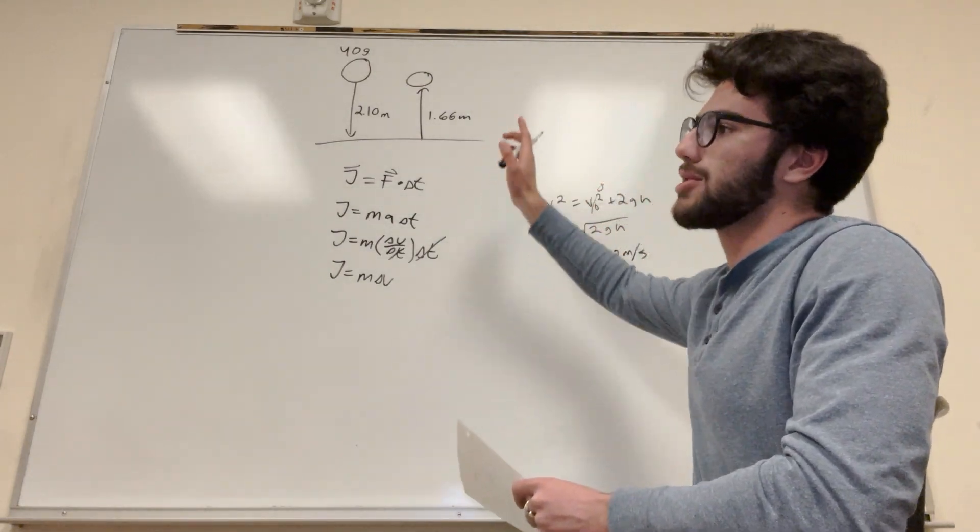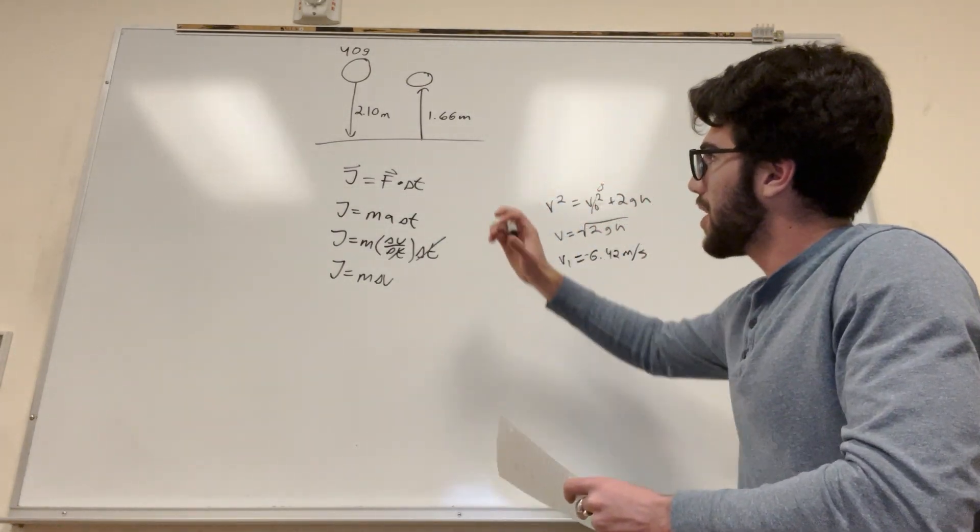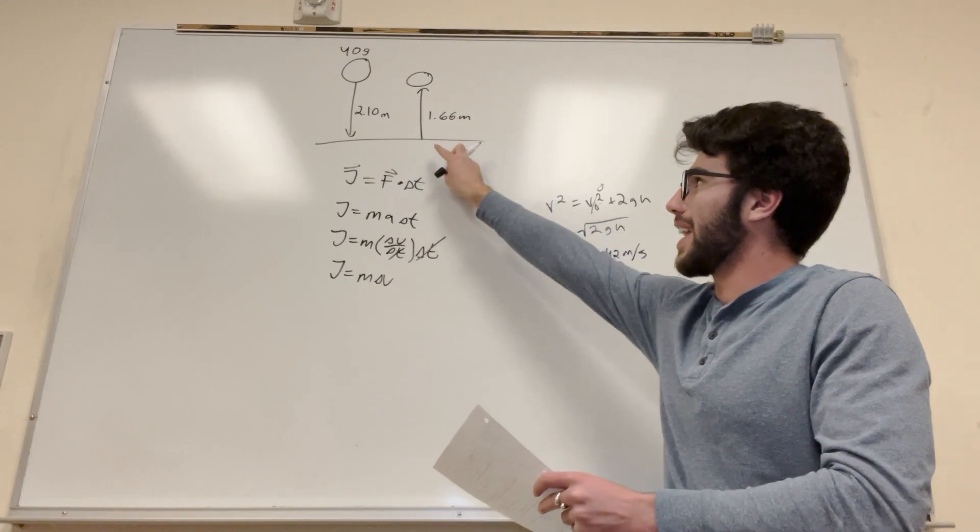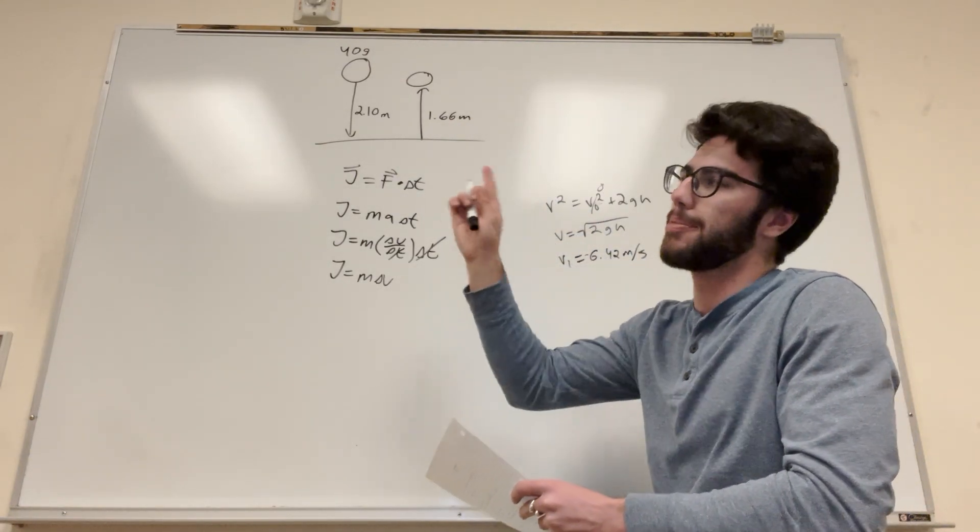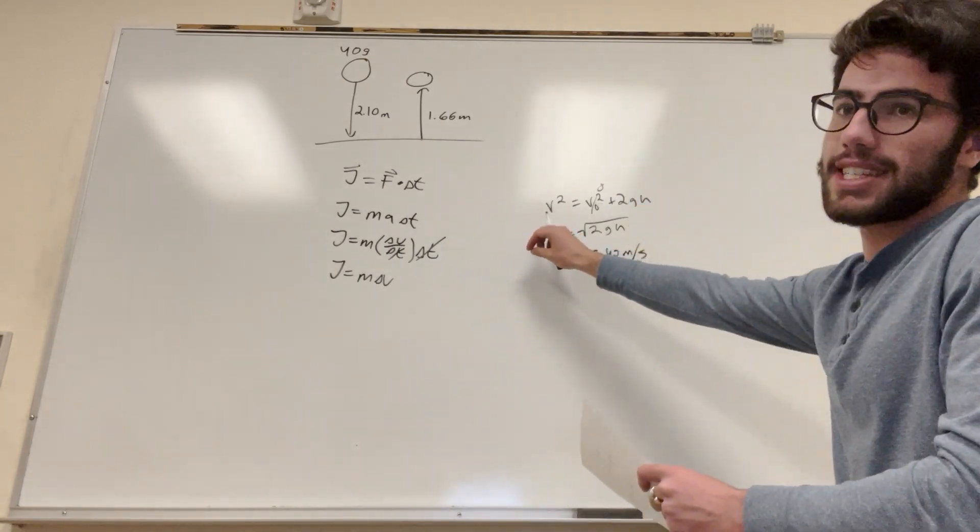Now we need to find the velocity when it bounces back up. So we know that if the ball was to fall from this point and land right there, like the moment right before it gets to the ground, the velocity would be the same as if it bounced and went back up. So we're going to do basically the exact same thing we did right here.